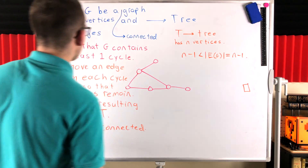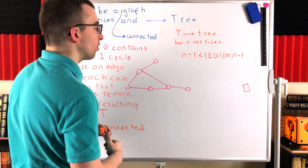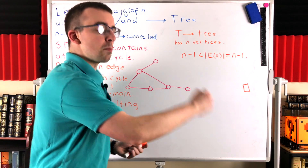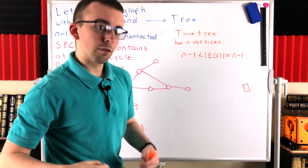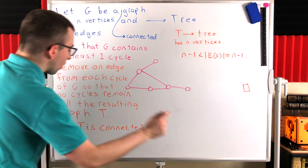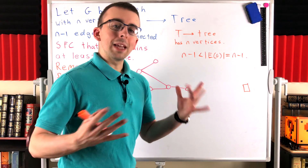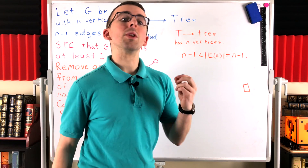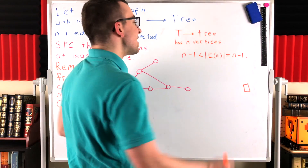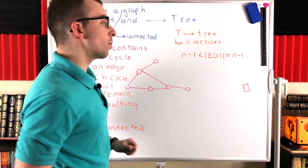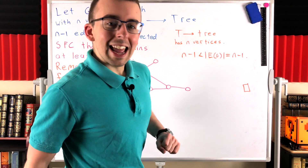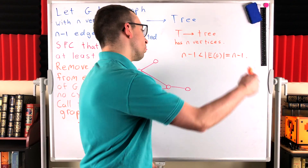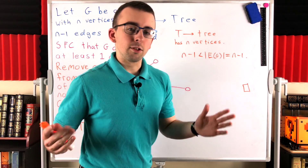Let me run you back through the ideas of the proof real quick. Let G be a connected graph with n vertices and n-1 edges. If it has no cycles, then we're done — it has to be a tree. So suppose for the sake of contradiction that it has at least one cycle. Then remove an edge from one of its cycles. If it still has cycles, remove an edge from one of the remaining cycles, and so on until it has no cycles — call the resulting graph T. We know T is connected because all we did was delete edges from cycles, and edges on cycles are not bridges, so removing them never disconnects the graph. So T is connected and has no cycles — thus T is a tree. It has n vertices because it has all of G's vertices and we didn't remove any. Thus, since it's a tree with n vertices, it has n-1 edges. Since we deleted edges of G to get to T, n-1 has to be less than the number of edges in G, which is n-1 — a contradiction. So G does not have any cycles, and thus G is a tree.